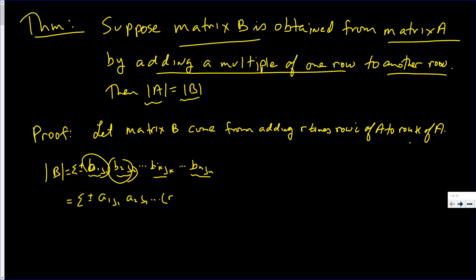The k-th element becomes r times row i, which is A_{i,jk}, plus A_{k,jk}, all the way down to B_{n,jn}. Now there is an addition there, so we can distribute. We get the summation plus or minus of A_{1,j1}, A_{2,j2}, all the way down, plus r times A_{i,jk}.